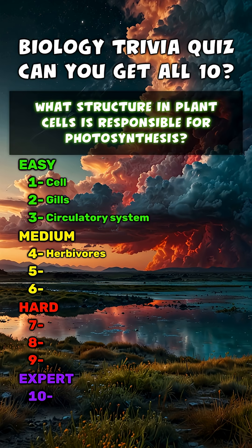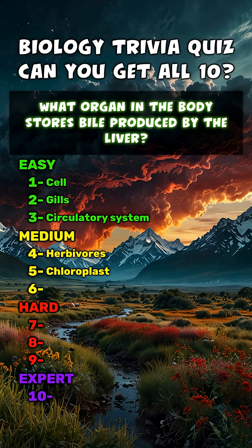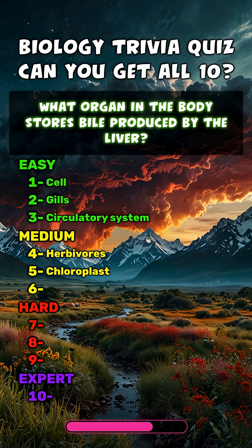What structure in plant cells is responsible for photosynthesis? Chloroplast. What organ in the body stores bile produced by the liver? Gallbladder.